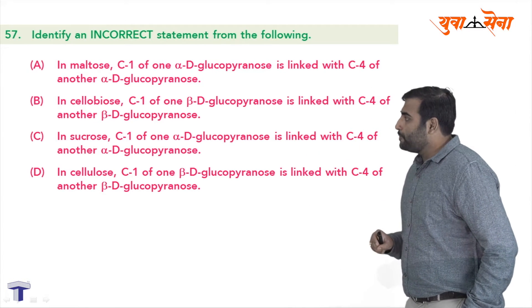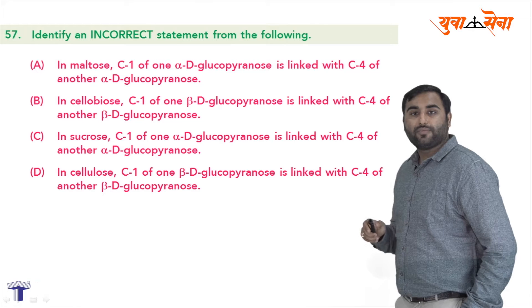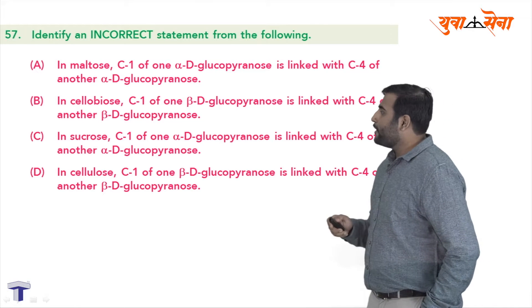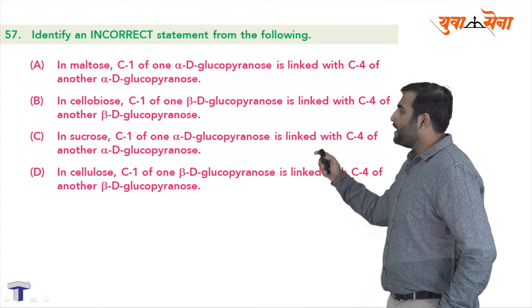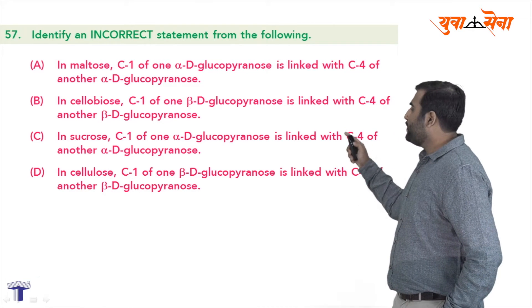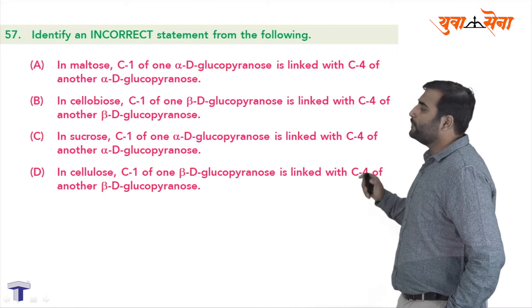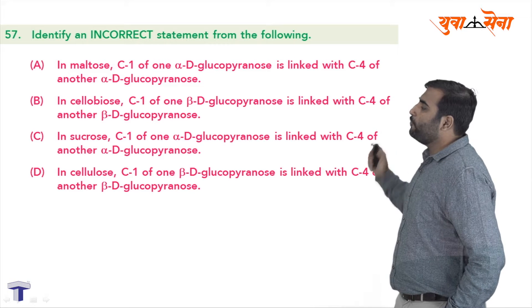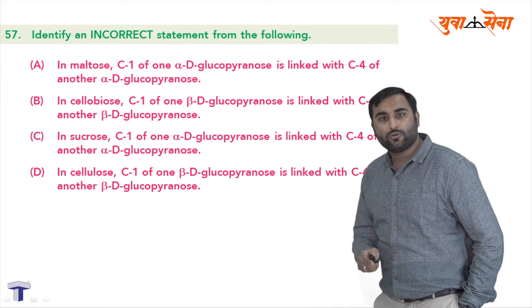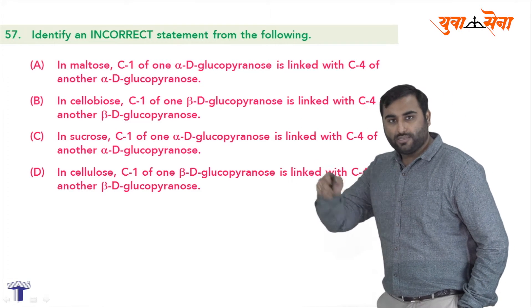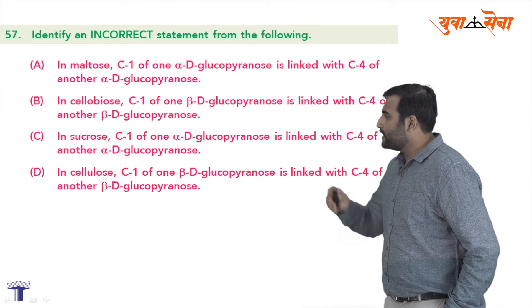Let us see the next option, option B. In cellobiose, carbon 1 of one beta-D-glucopyranose is linked with carbon 4 of another beta-D-glucopyranose. So once again draw the structure of cellobiose.